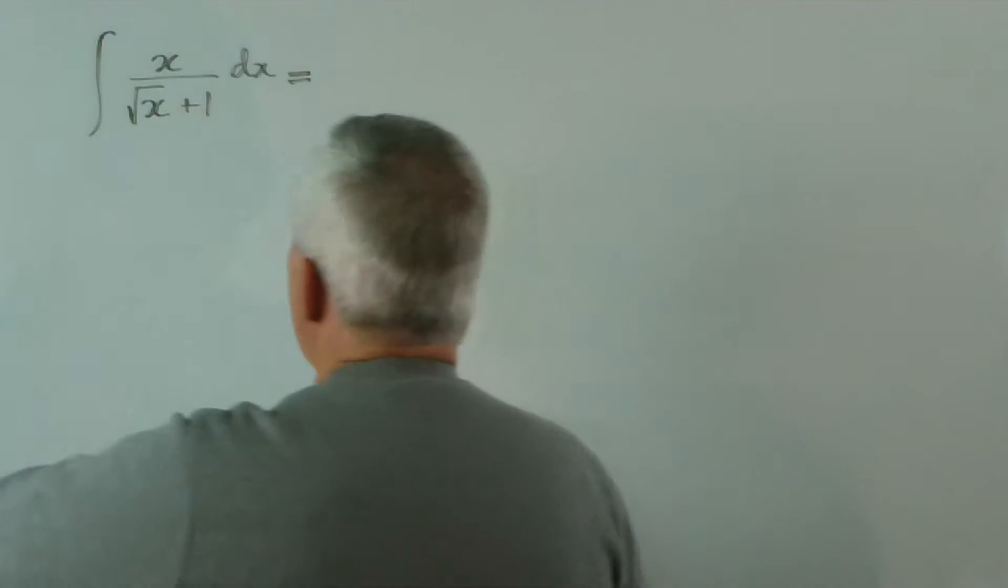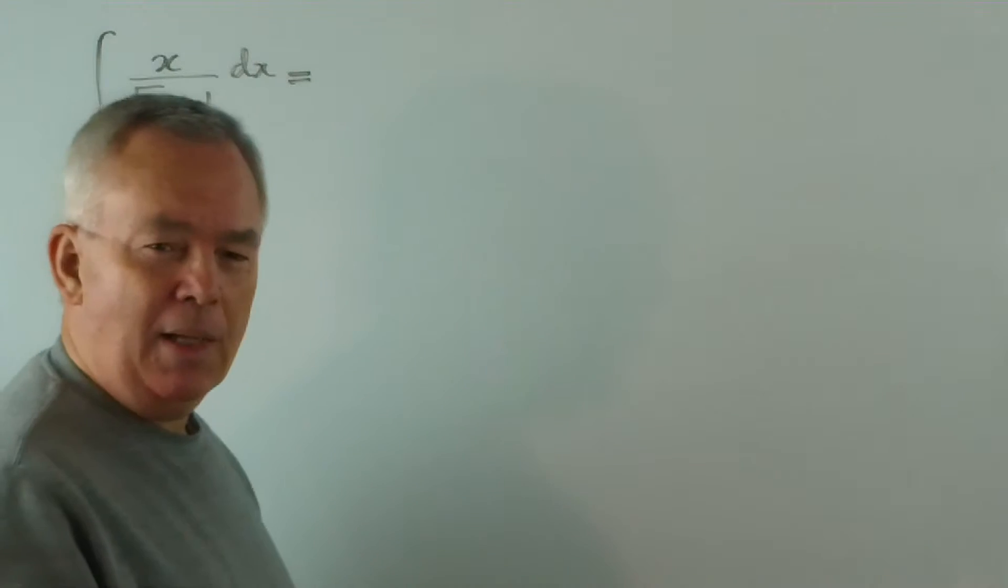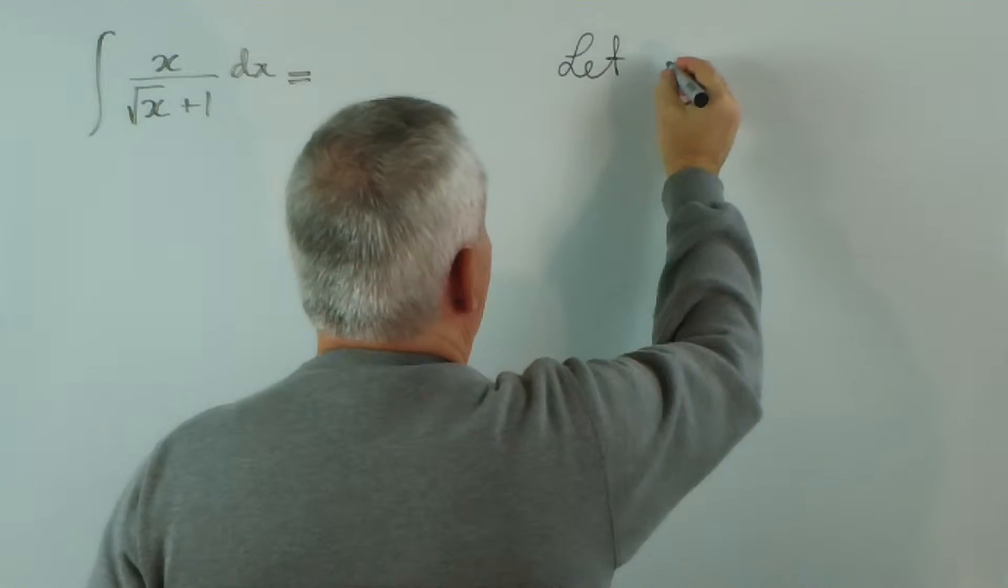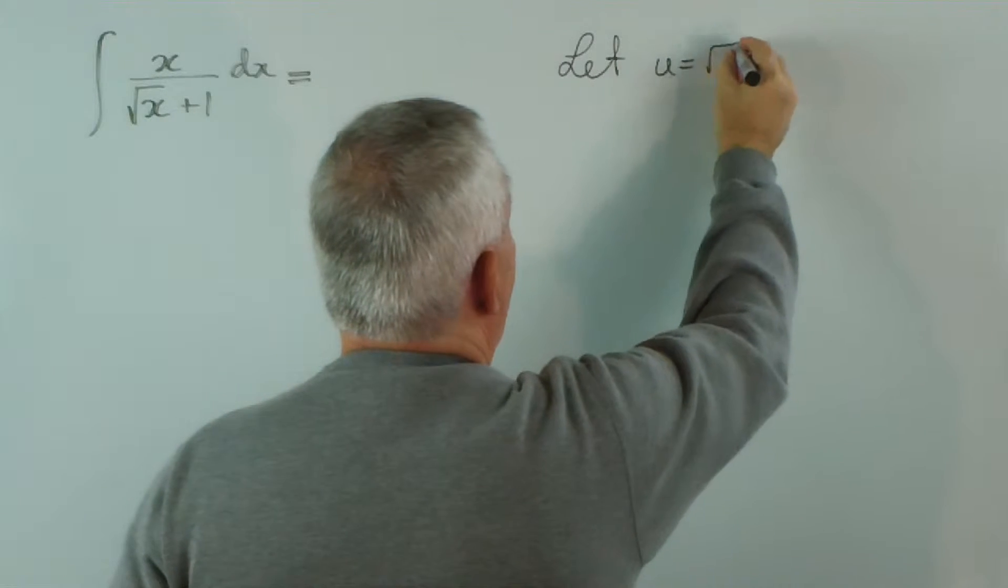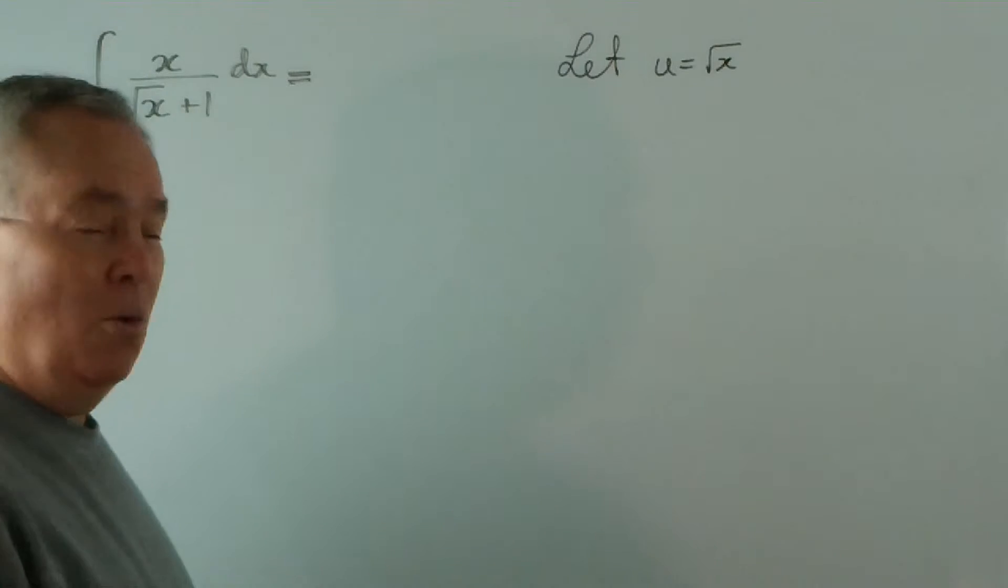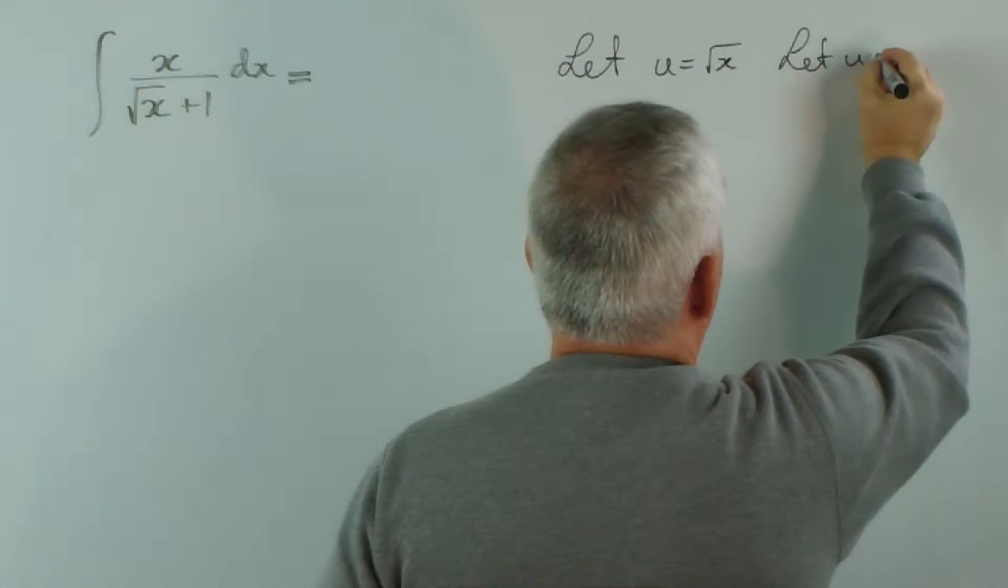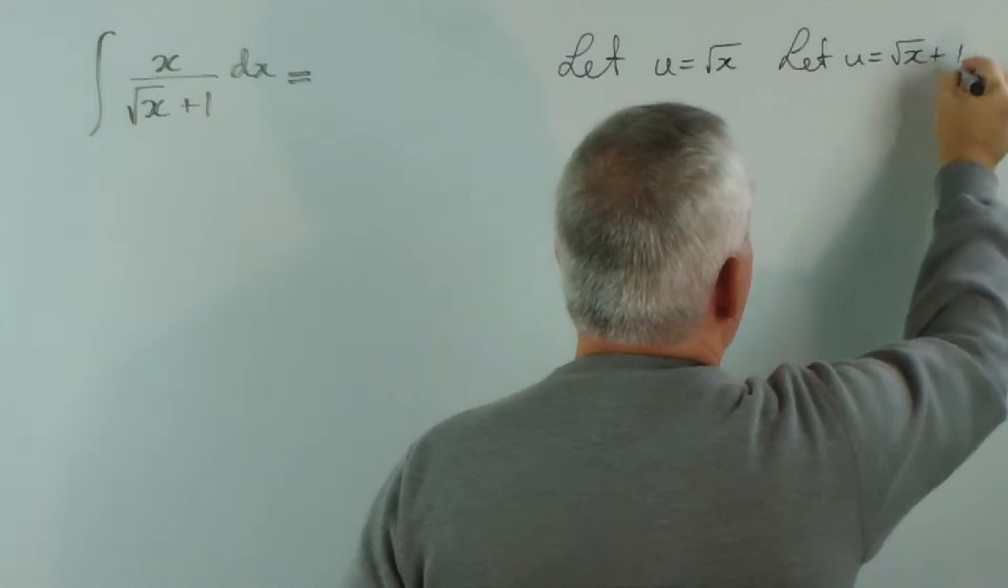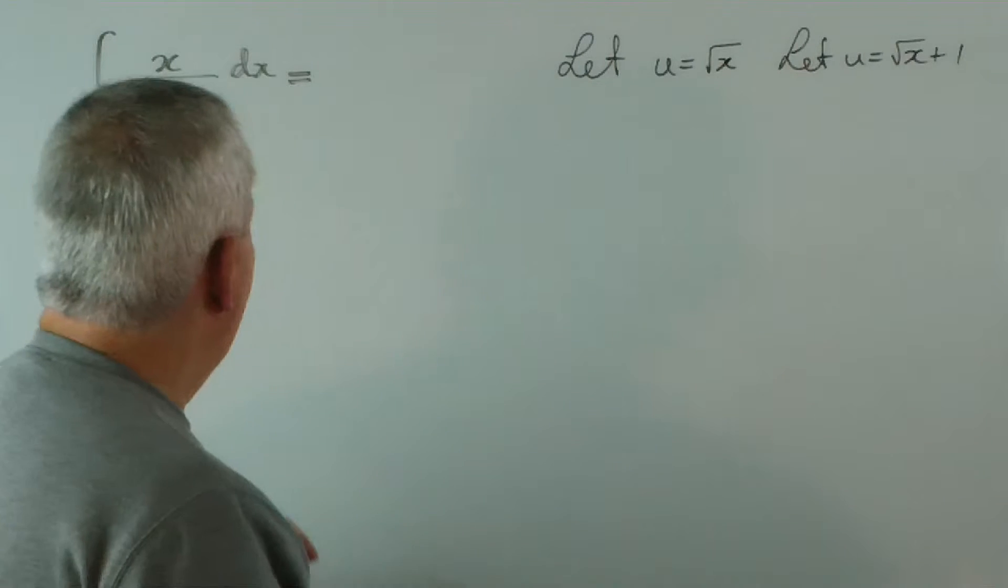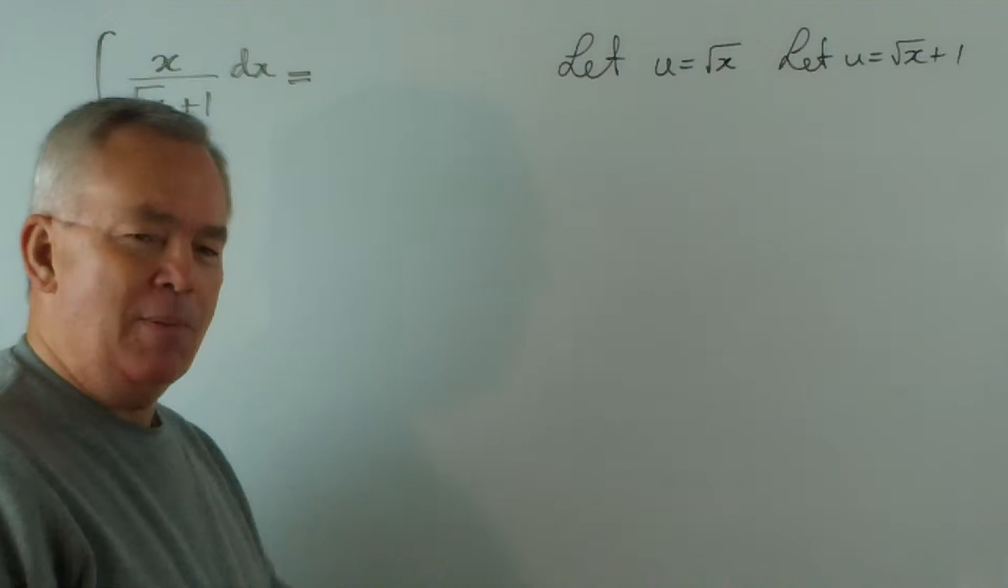You can see that we could substitute for the more complicated part here and simply say, let, for example, u equal root x. That would be a good substitution. Alternatively, we could let u equal root x plus 1. And both of them have merit, but both of them have consequences.